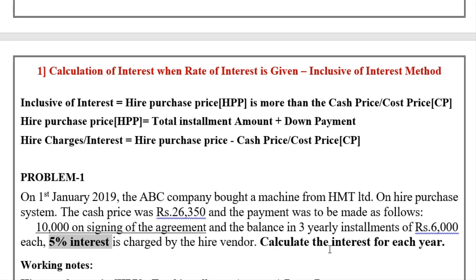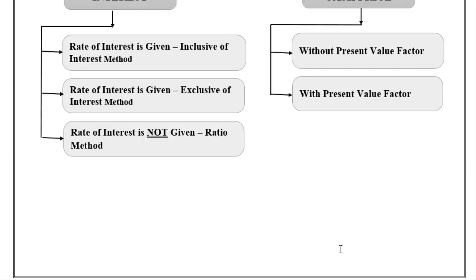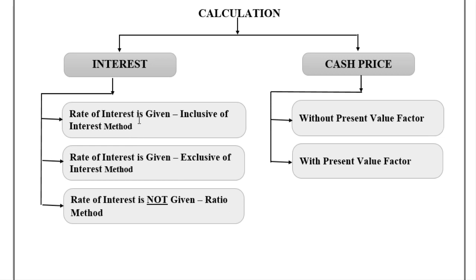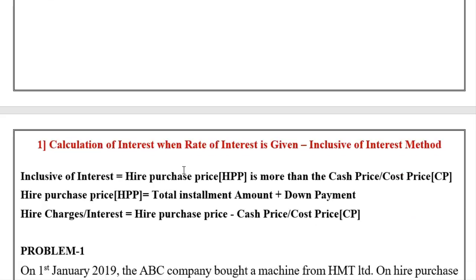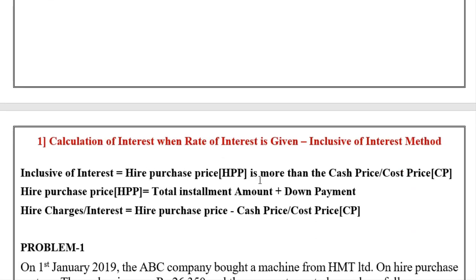There are three installments total and 5% interest is charged. We need to calculate interest for each year. When the rate of interest is given, we determine whether to use the inclusive or exclusive method. The inclusive of interest method applies when the hire purchase price is more than the cash price — let's check.